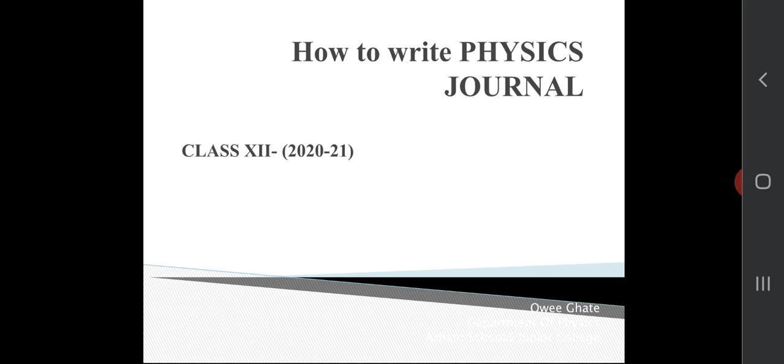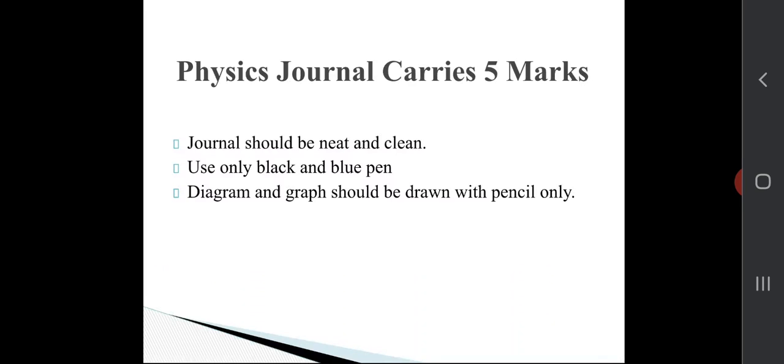The physics journal carries five marks. The journal should be neat and clean. Use only black or blue pen, and diagrams and graphs should be drawn with pencil only.